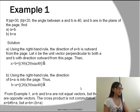From example 1, A cross B and B cross A are not equal vectors, but they are opposite vectors because they have different direction. Therefore, the cross product is not commutative.